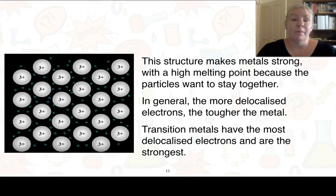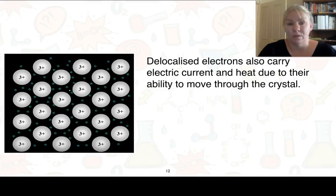The structure is also what makes the metal strong. It's got a very high melting point because the particles want to stay together. Each of those positive ions are surrounded by negative electrons, and so in general the more delocalised electrons the tougher the metal. If we have a think about our transition metals, they've got the most delocalised electrons and so therefore we find they are the strongest.